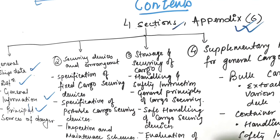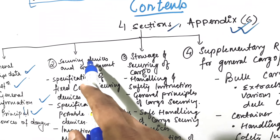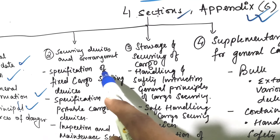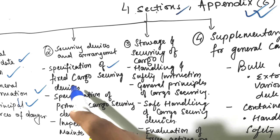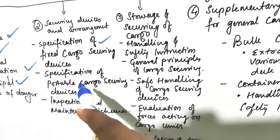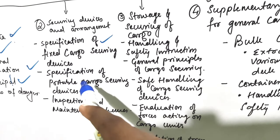The second section is Securing Devices and Arrangements. In this we have specifications of fixed cargo securing devices, specifications of portable cargo securing devices, and lastly inspection and maintenance schemes.